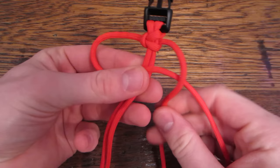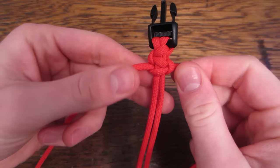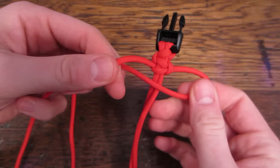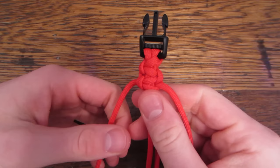We're going to cross it over the top, take the right side, over, back around, and through that loop. Left over the top, right comes down over the top, back around, and through that loop.